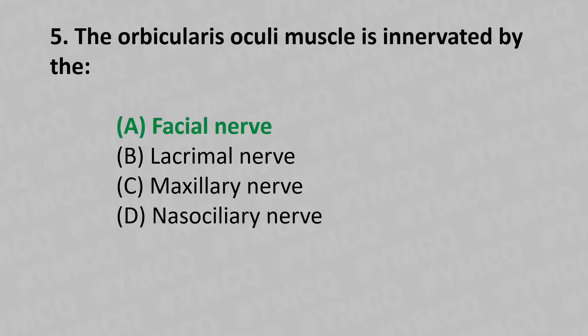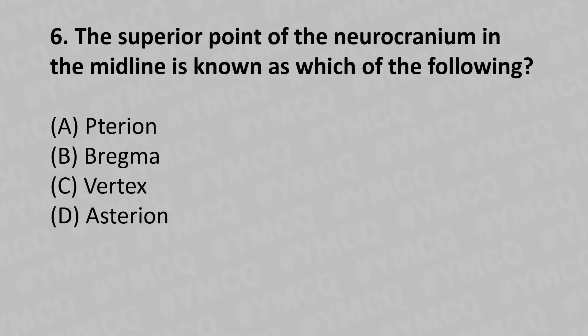Moving to our sixth question: the superior point of the neurocranium in the midline is known as which of the following? Option A: pterion. Option B: bregma. Option C: vertex. Option D: asterion. The answer is Option C: vertex.